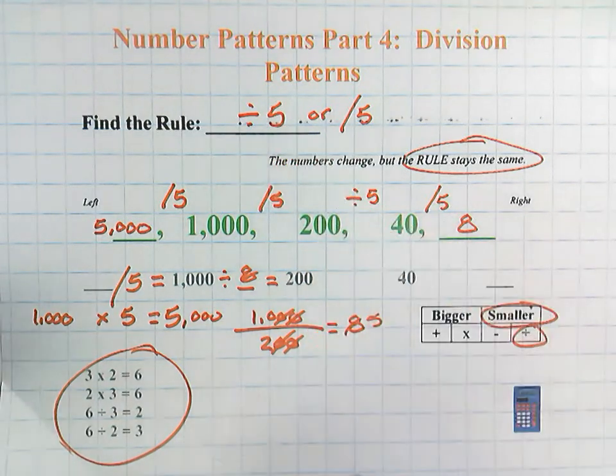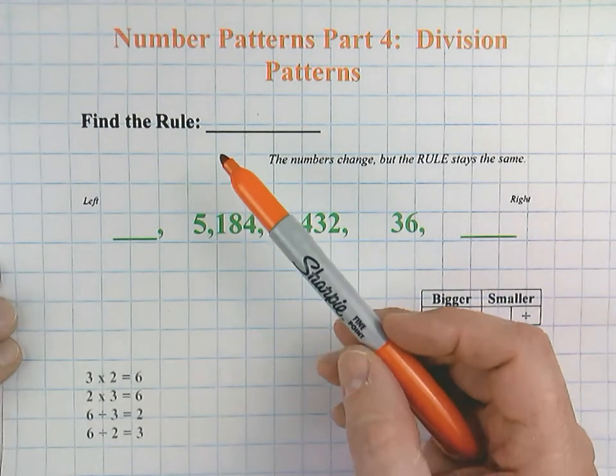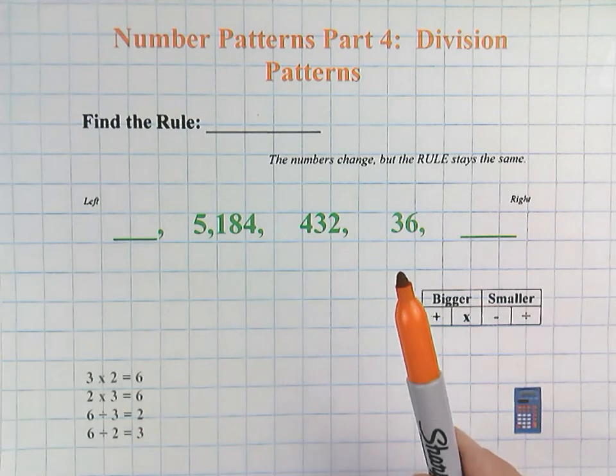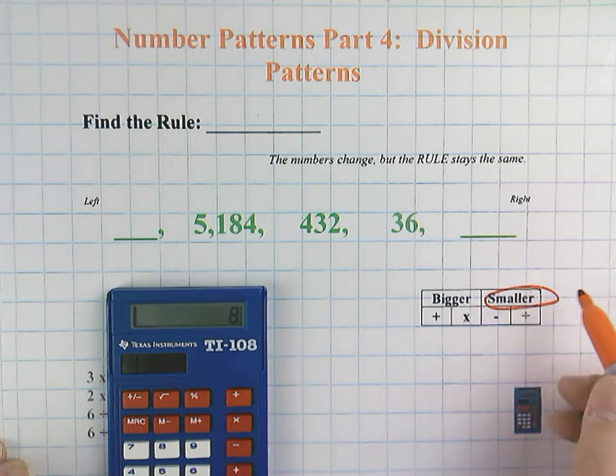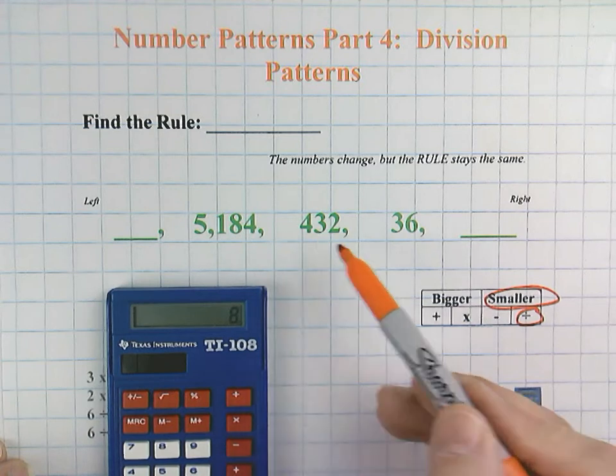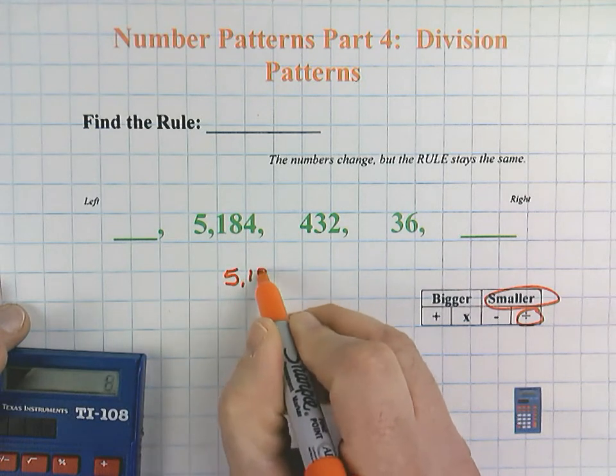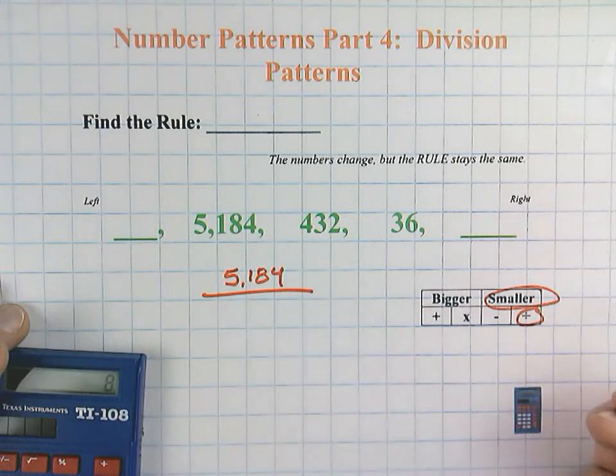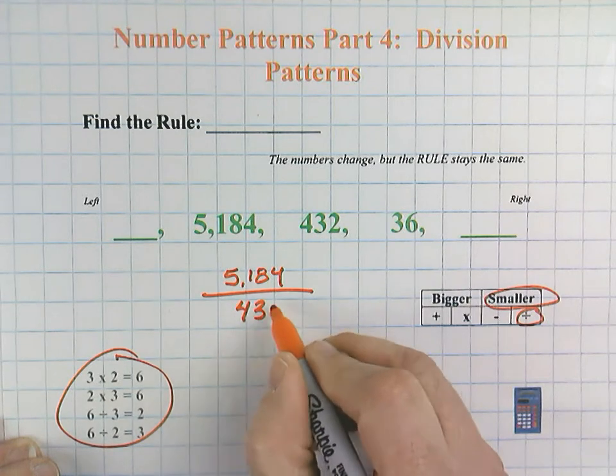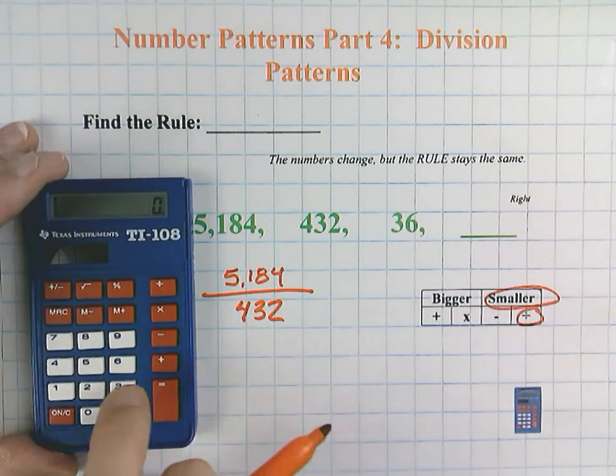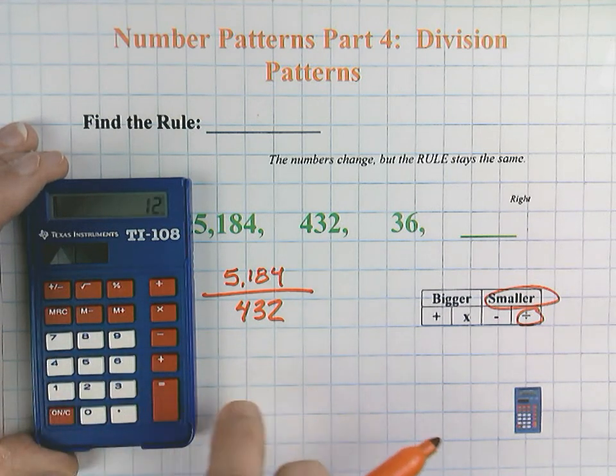So our rule was divide by five. Find the rule. And pause if you want to try it. And again, you can use a calculator. 5,184, 432, 36, getting smaller. And once again, it's a division. Remember how we ruled out subtraction. So our steps are going to be 5,184 divided by blank. But because of fact families, we can use that number and find the rule. So 5,184 divided by 432 equals 12.